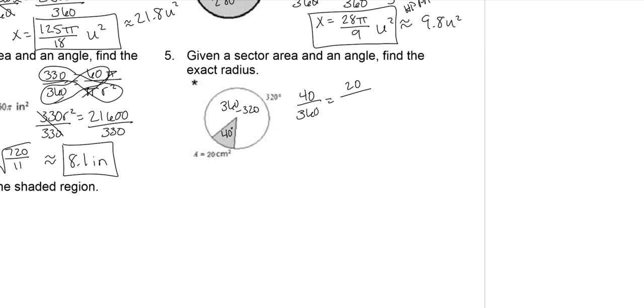Your sector area, which is 20 over πr². Cross multiply, and you get 40πr² equals 360 times 20, which is 7,200. Divide by 40π on both sides. 7,200 divided by 40 is 180. So you have 180/π. And then you take the square root of both of those.